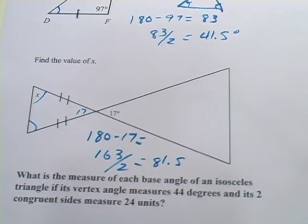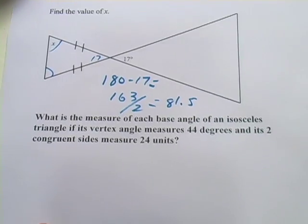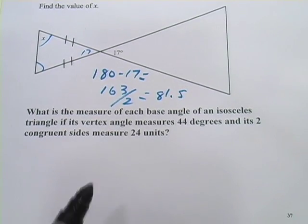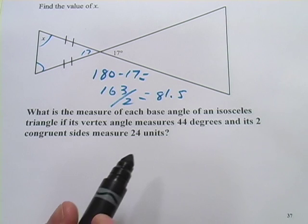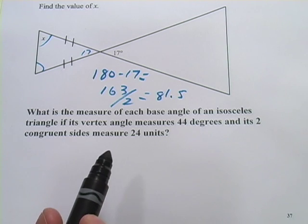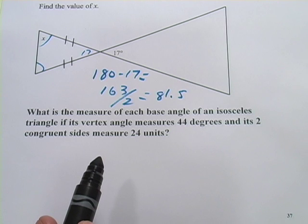One more. This one says, what is the measure of each base angle of an isosceles triangle if its vertex angle measures 44 degrees and its two congruent sides measure 24 units?